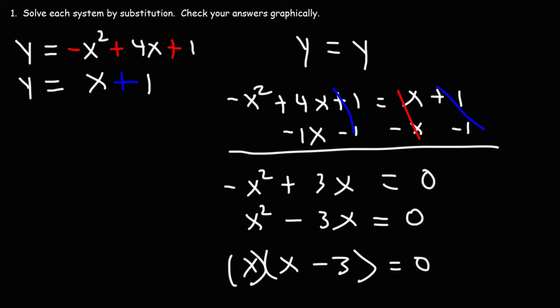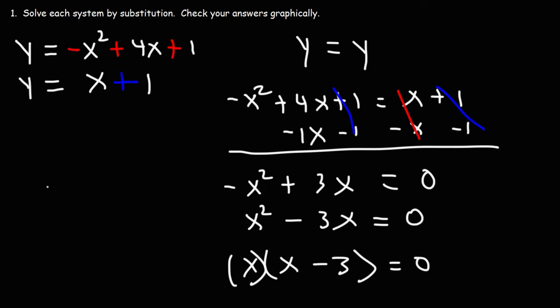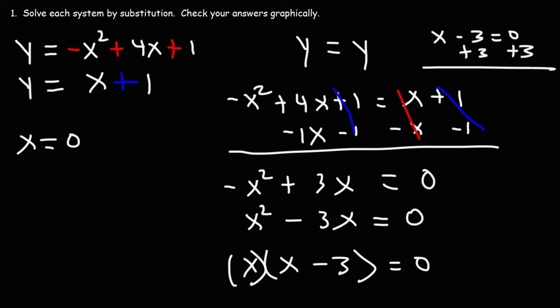Now we set each factor equal to zero using the zero product property. From the first factor, x is equal to zero. Setting x minus 3 equal to zero and adding 3 to both sides, we get x is equal to positive 3.